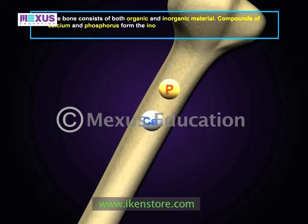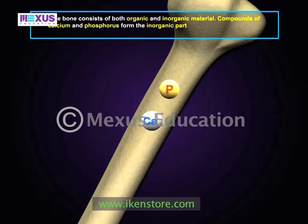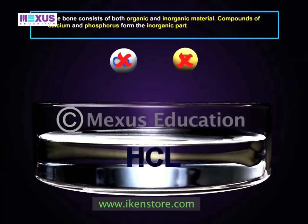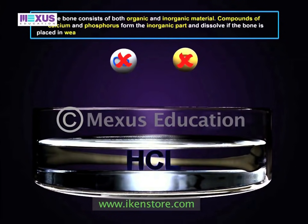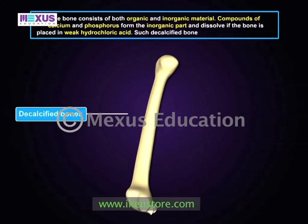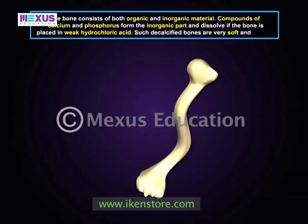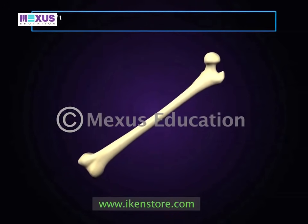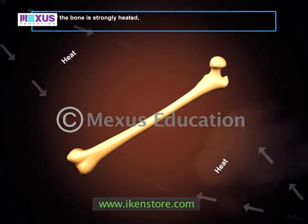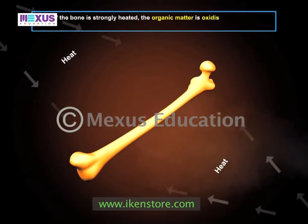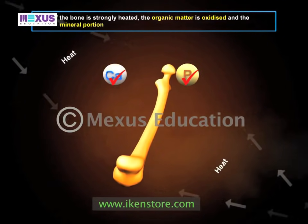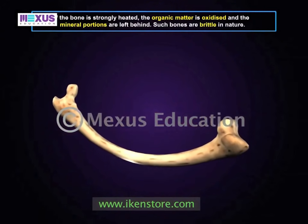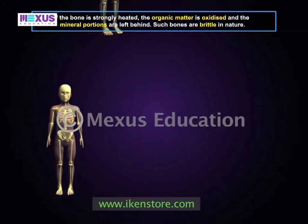Bone consists of both organic and inorganic material. Compounds of calcium and phosphorus form the inorganic part. If the bone is placed in weak hydrochloric acid, these mineral portions will dissolve — such a bone is called a decalcified bone. It is very soft and flexible. However, if the bone is strongly heated, the organic matter is oxidized and the mineral portions are left behind.